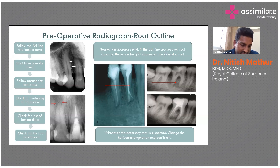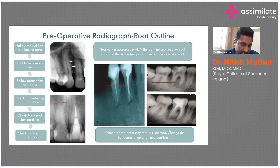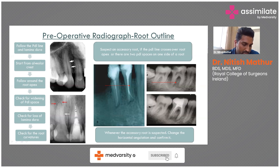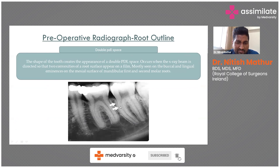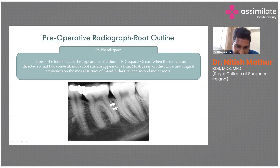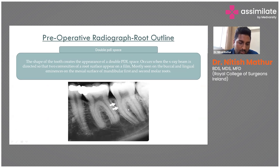If there is an extra PDL space, an accessory root — known as radix — is suspected, which demands mesially or distally angulated x-rays; it is mandatory to take them. Sometimes we get confused with the double PDL space, which mimics an extra root. This mostly occurs on the mesial side of mandibular molars where buccal and lingual convexities of the root are seen as a double PDL space — this is not an extra root.